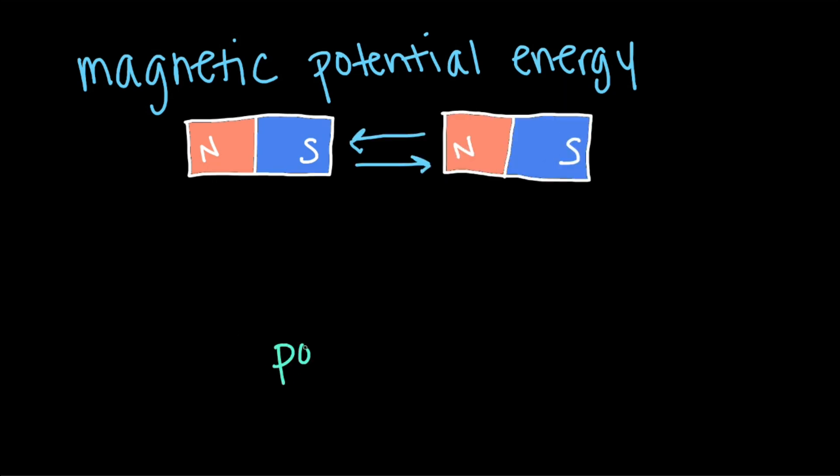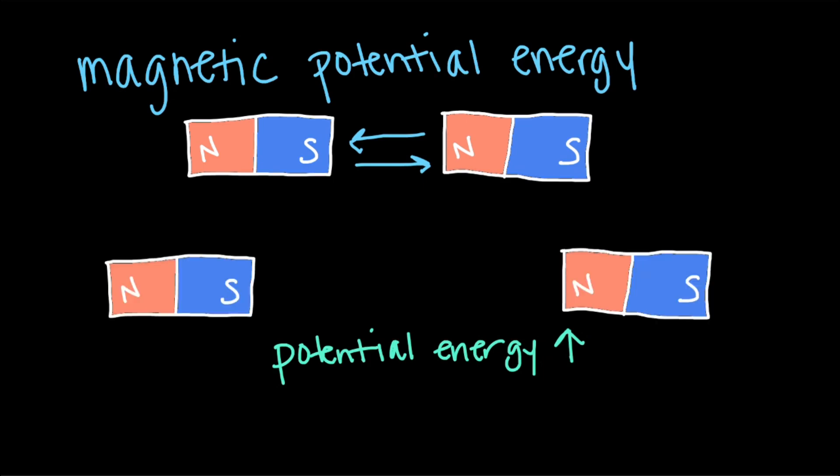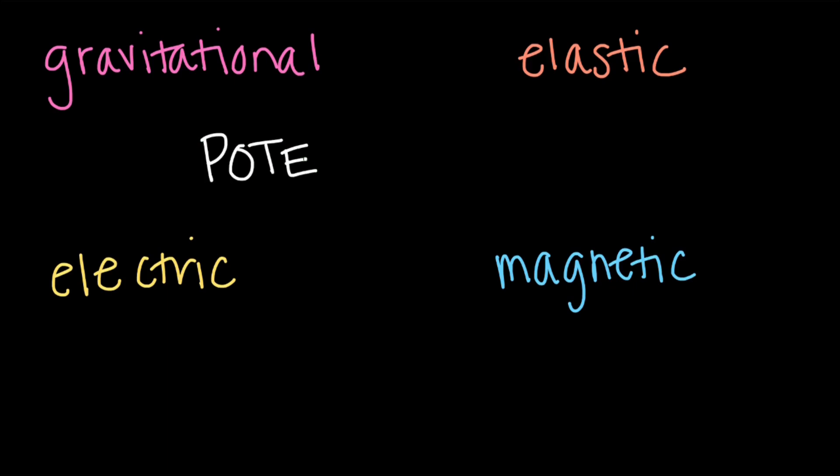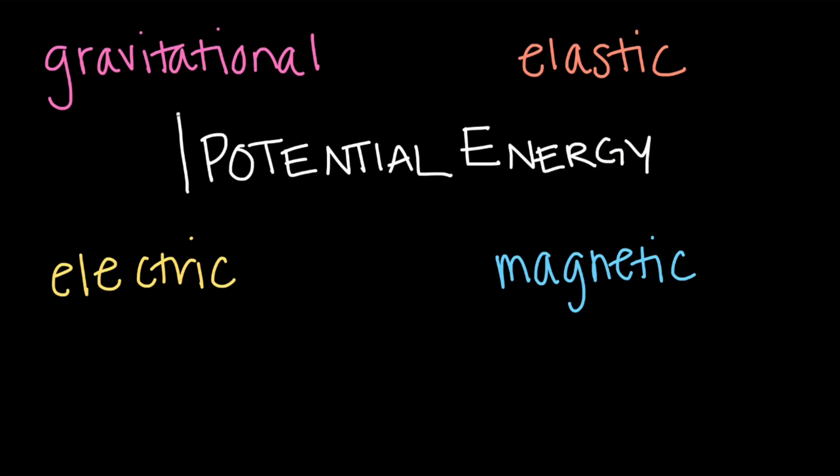Again, you could increase the potential energy by moving the magnets opposite the direction of the magnetic force, for example by pulling apart a north pole and a south pole. All of these types of energy are due to different forces and are calculated differently from different equations, which we won't cover here, but they are all potential energy.